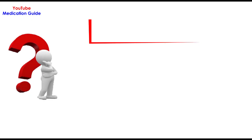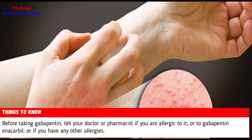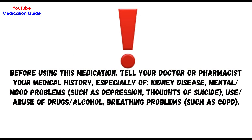Here are some things to know before using Neurontin. Before taking Gabapentin, tell your doctor or pharmacist if you are allergic to it, or to Gabapentin Enacarbil, or if you have any other allergies. Before using this medication, tell your doctor or pharmacist your medical history, especially of kidney disease, mental or mood problems, use or abuse of drugs or alcohol, or breathing problems.